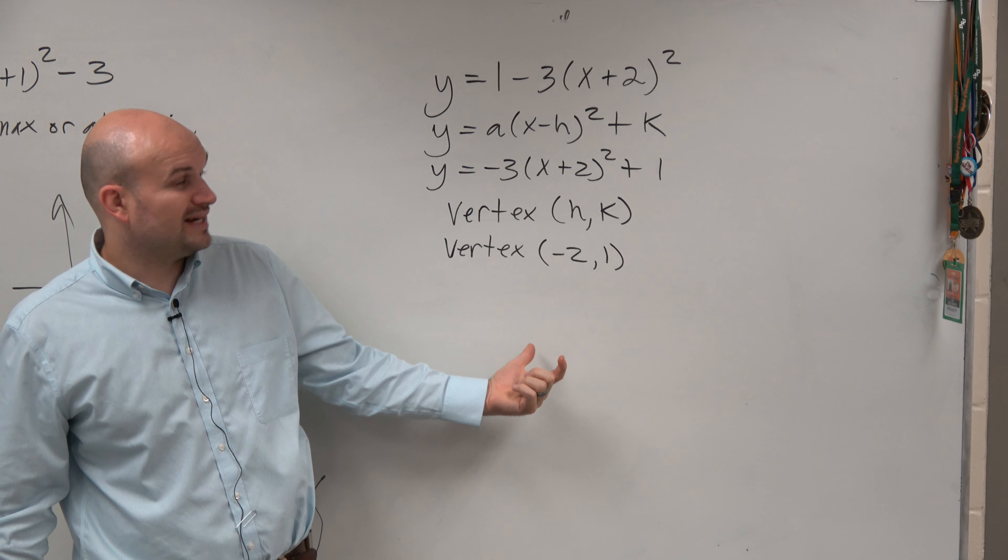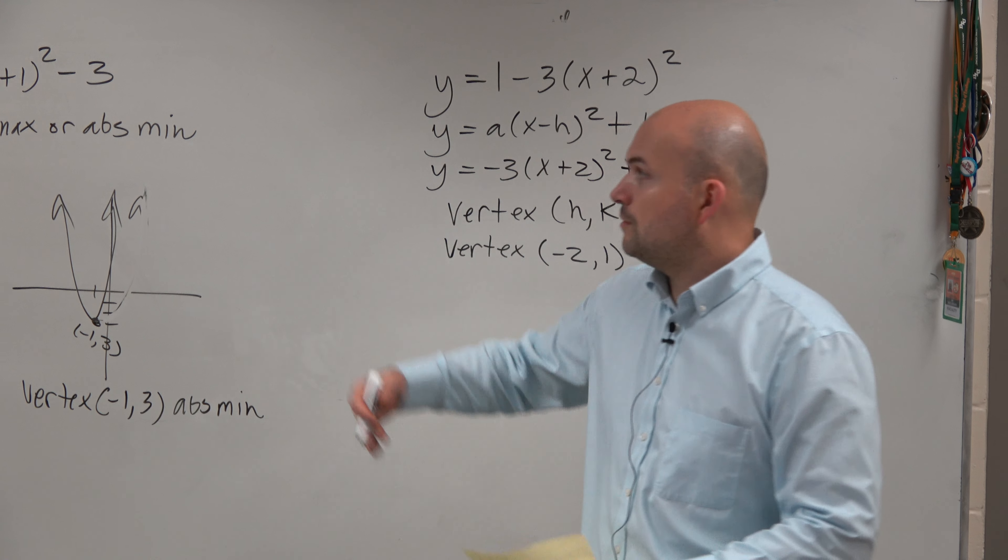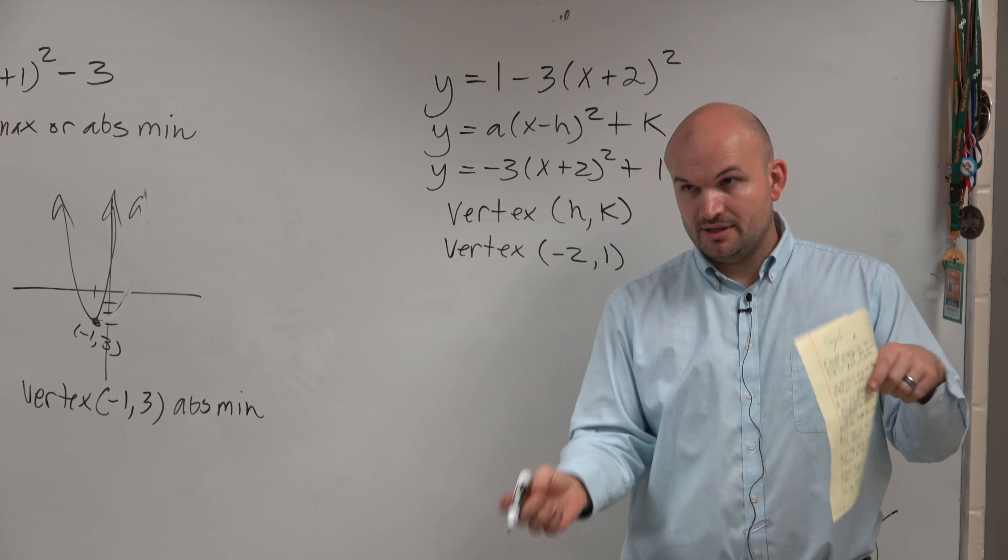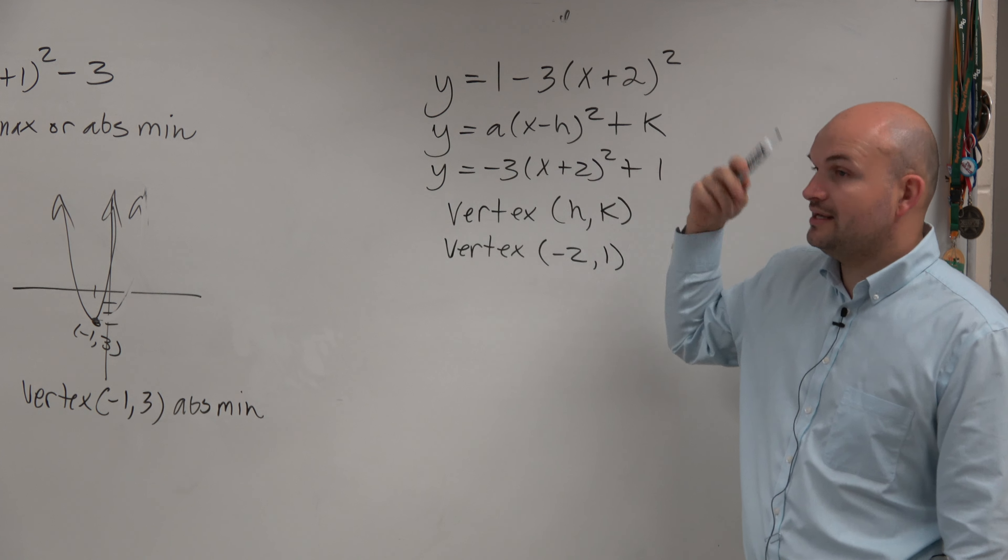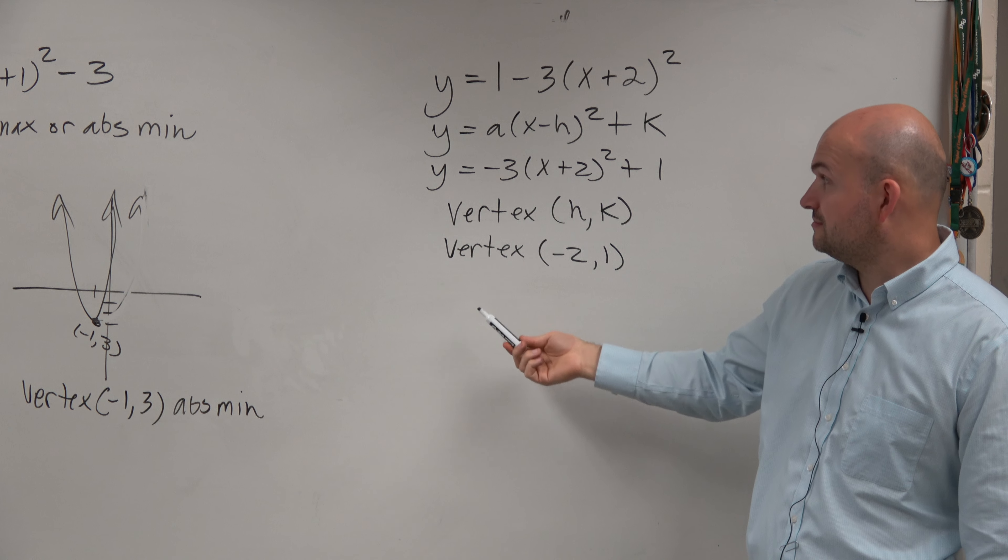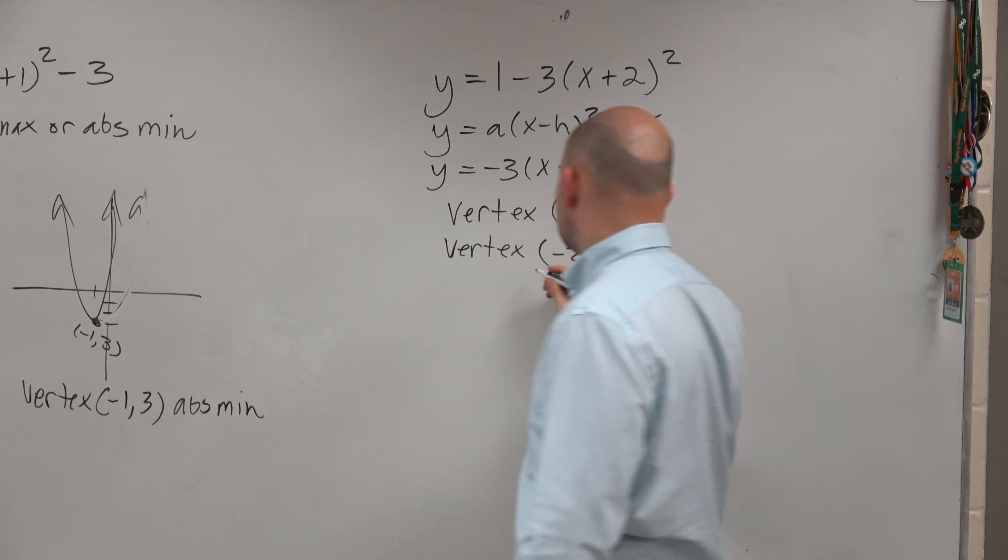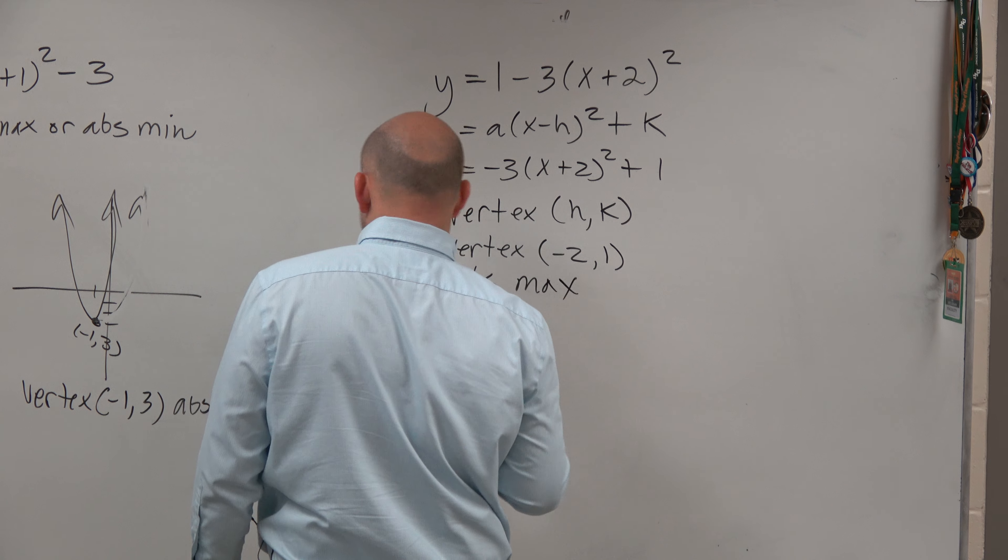Now the other thing we've got to determine is: is this a max or a min? When the graph was opening up, we knew we have a minimum. If the graph opens down like that one, we're going to have a maximum. If the graph is reflected about the x-axis, it opens down. Is this graph reflected about the x-axis? Yes. So this is an absolute max.